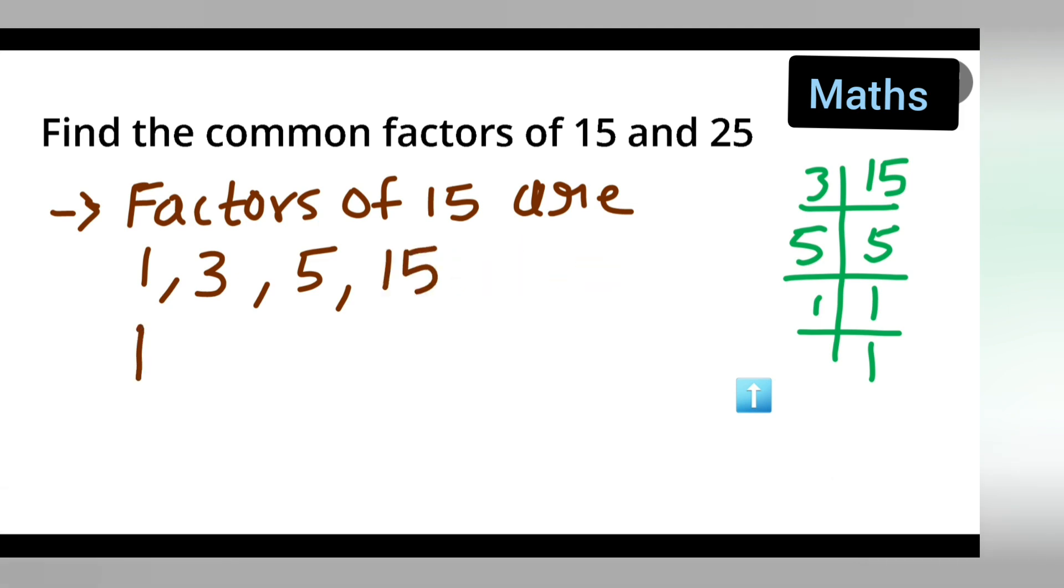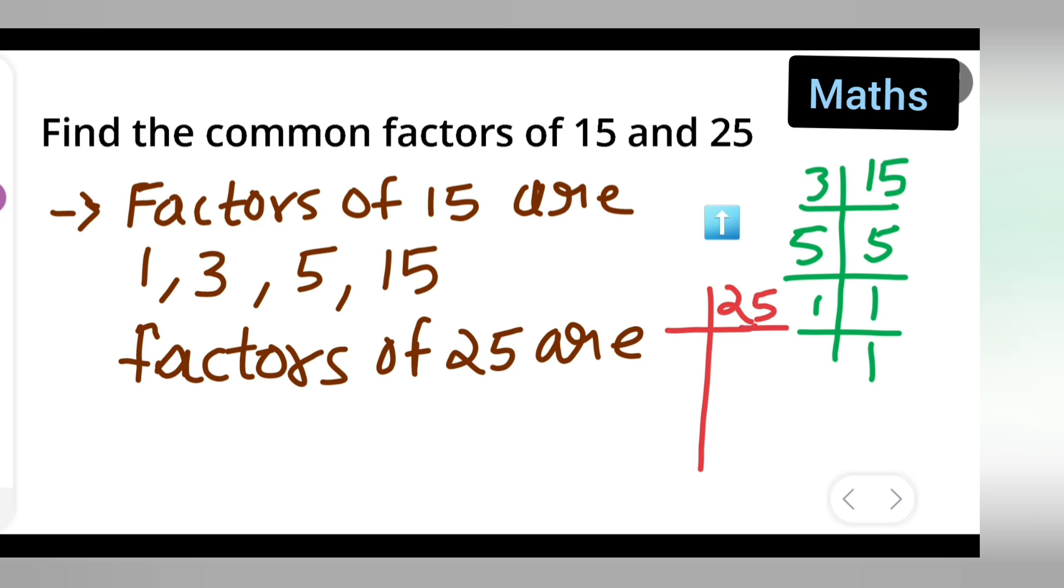Now let us see the factors of 25. Okay. Factors of 25 are... Now let us see what are the factors of 25. Write down 25 over here. You will get 5 times 5 is 25, 5 times 1 is 5. Right. So factors of 25 are 1, 5, and 25.